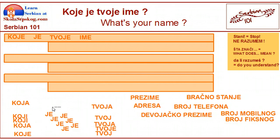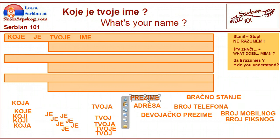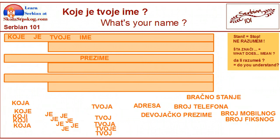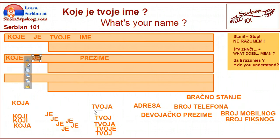Okay, now I will be quiet and you try to speak as I pull these words. I will start with the word which you want to ask so that you can remember what to use. Prezime. Prezime. Koje je tvoje prezime?